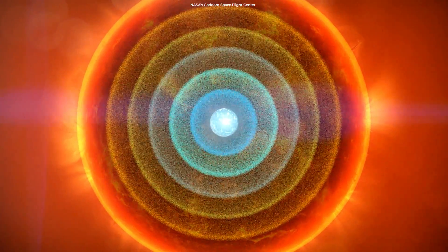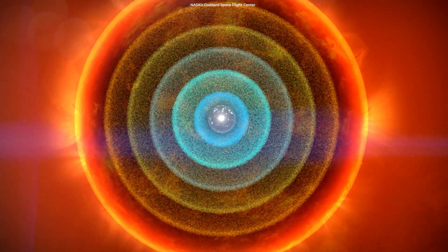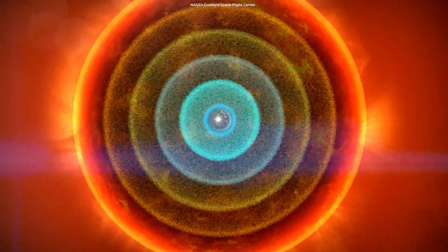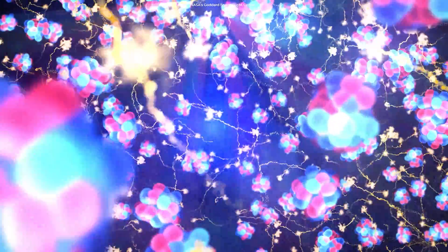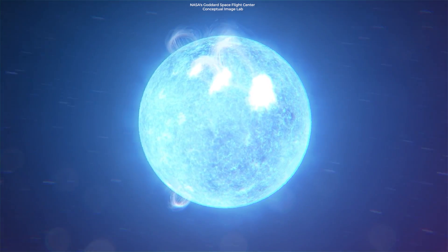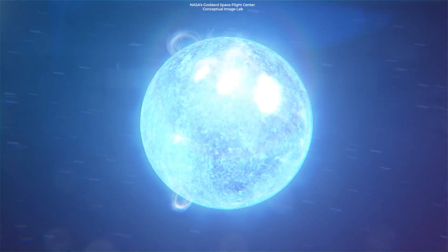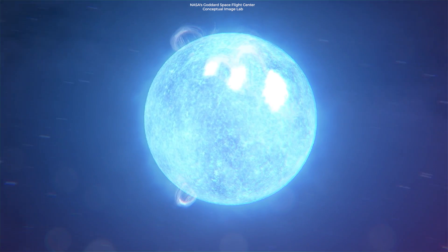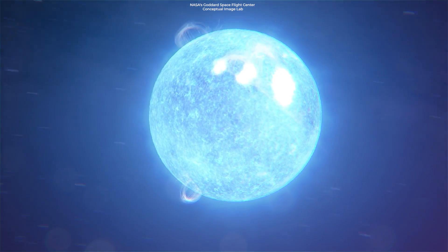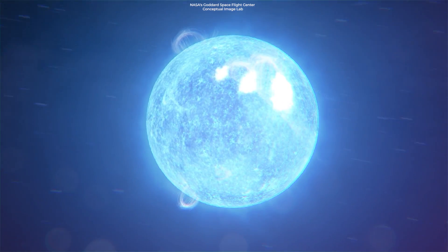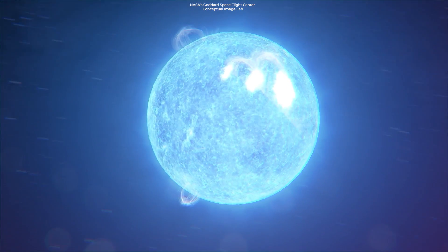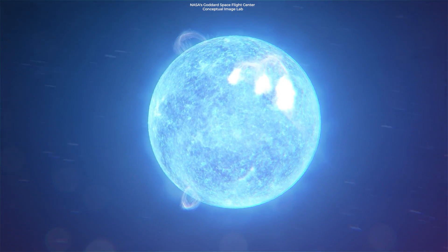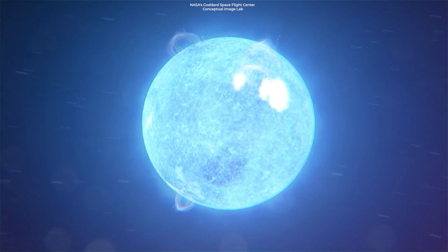Neutron stars are the remnants of massive stars that have exploded in supernovae. What remains is a core so dense that protons and electrons have merged to form neutrons. The surface gravity on a neutron star is so intense that if you were to drop an object from just one meter above it, it would hit the surface in a microsecond, accelerating to millions of kilometers per hour.